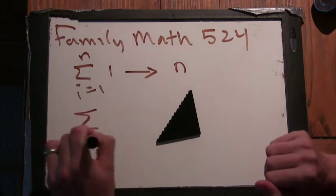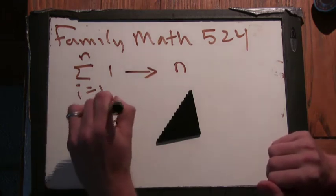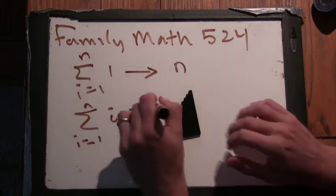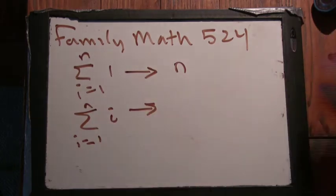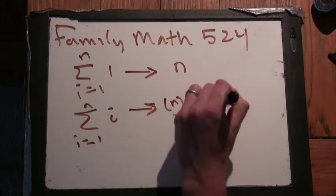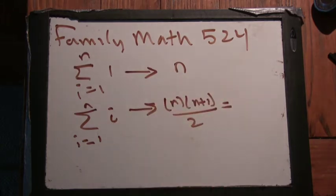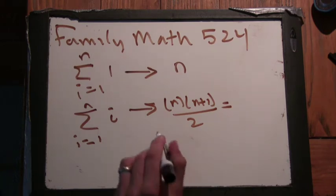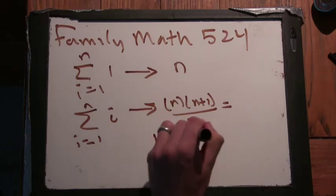So how about sum i equals 1 to n of i? What would this sum be? That's n times n plus 1 over 2. And what does this sum represent if we're going to write it out? It's the integers, positive integers, up to n. So it's 1 plus 2 plus...